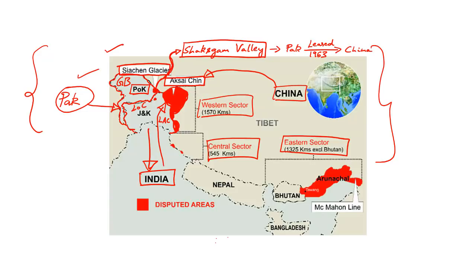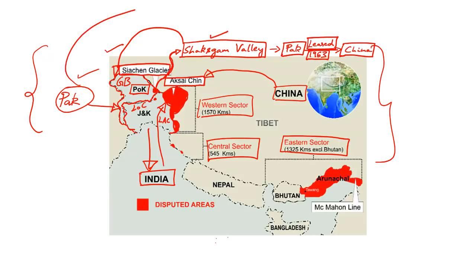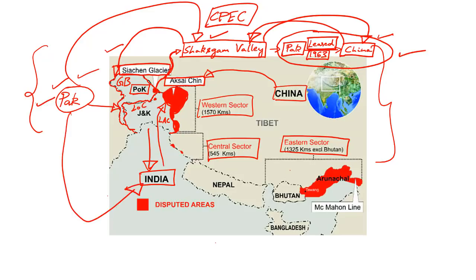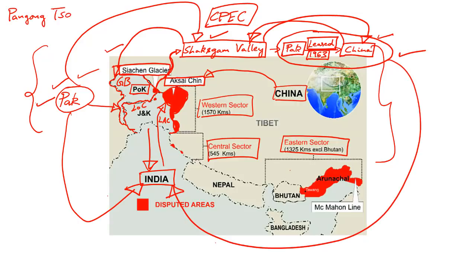In the late 1940s, Pakistan occupied parts of Jammu and Kashmir, referred to as POK, including the Gilgit-Baltistan region. From the 1950s, China has retained illegal control over Aksai Chin. The ceasefire line between India and Pakistan is referred to as the Line of Control, whereas the ceasefire line between India and China in the Western sector is referred to as the Line of Actual Control. To the north of India's Siachen Glacier, we have the strategically important Shaqskam Valley.